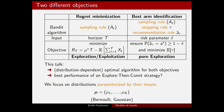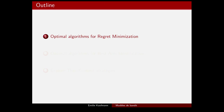Throughout the talk, we focus on simple bandit instances in which the distribution of all arms is parameterized by their means — for example, in the Bernoulli case associated with the medical trial example, or assuming Gaussian distributions as in the previous talk. The model is entirely parameterized by this vector of means mu.